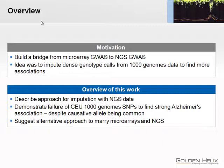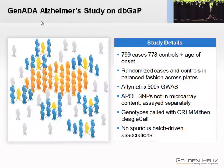The work really kind of shows that there's only so much we can really do with this data. In particular I'm going to go through an Alzheimer's study and show a dramatic failure to use 1000 Genomes data imputation to find an association, and hopefully suggest some alternative approaches where we might find some marrying between the technologies, at least until sequencing completely replaces microarrays, whether that's five years or sooner.